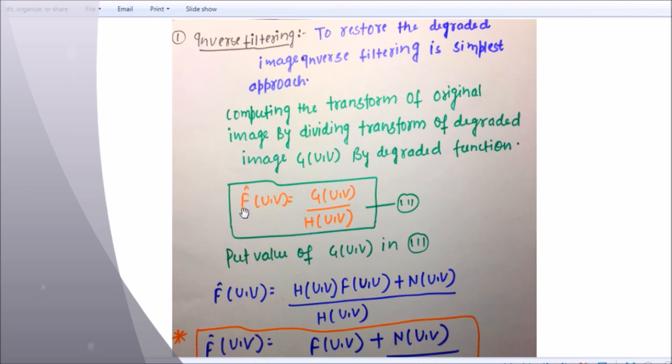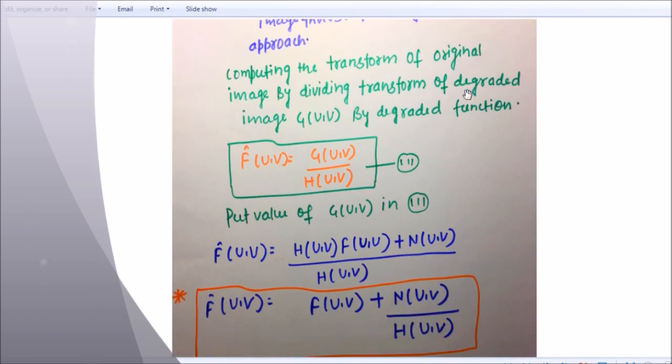Now here, F cap (u,v) equals G(u,v) upon H(u,v). What is G(u,v)? G(u,v) is nothing but degraded image, and H(u,v) is nothing but degraded function. Here we are computing the transform of original image by dividing the transform of degraded image G(u,v) by degraded function H(u,v).